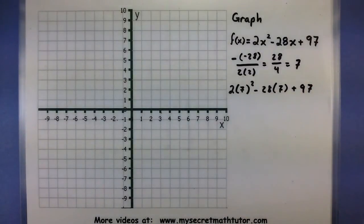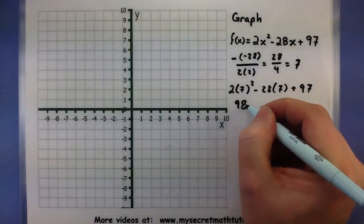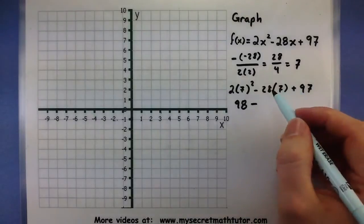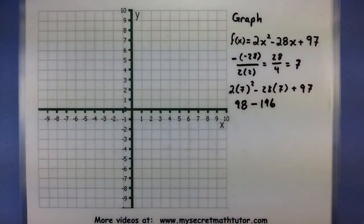Big numbers in here, but I think we can take care of it. So 2 times 49, 98, minus 28 times 7, 196, and 97.